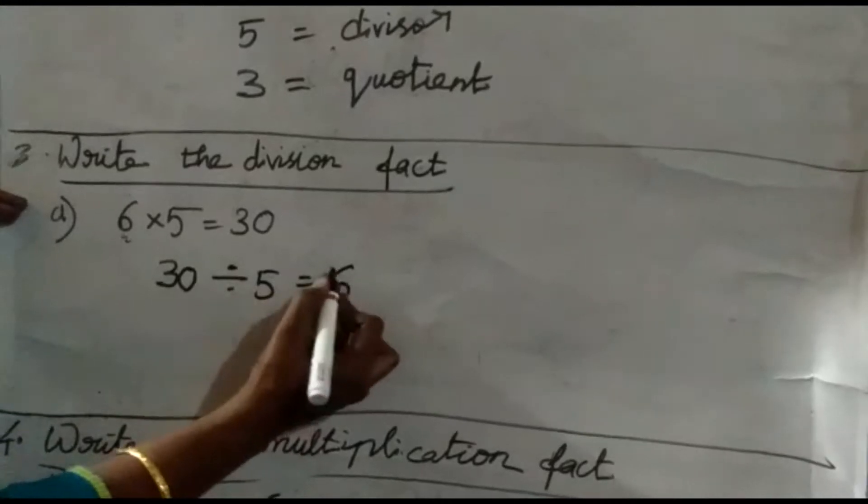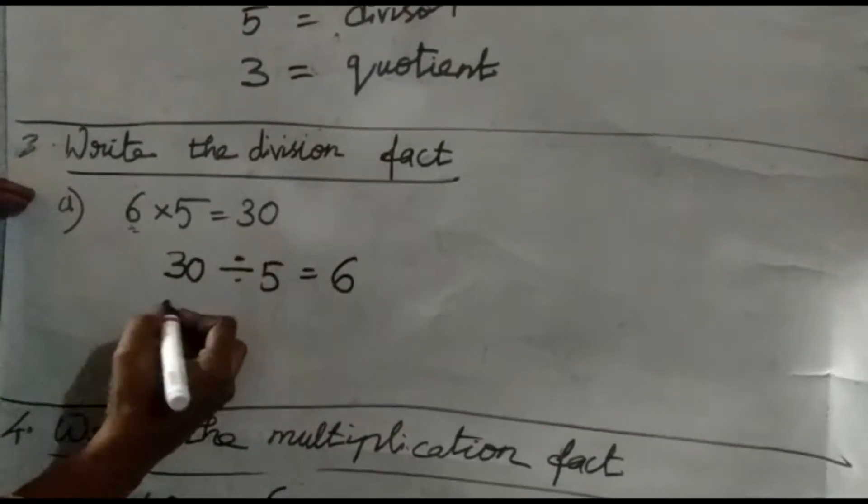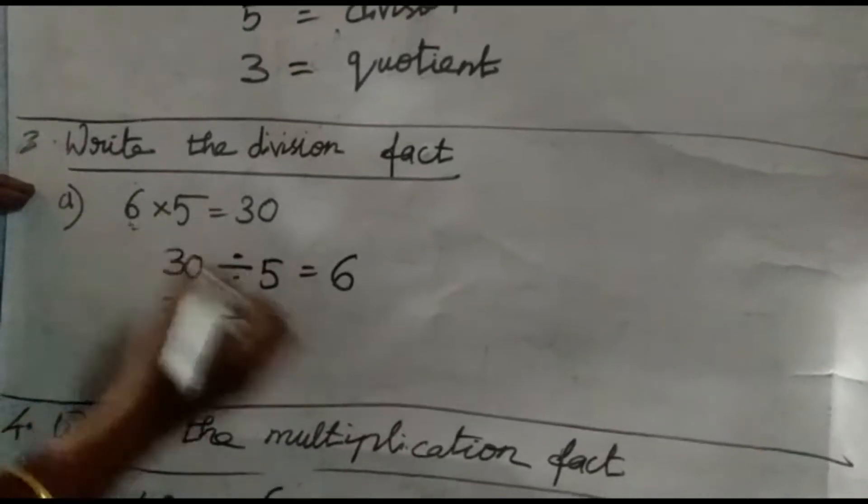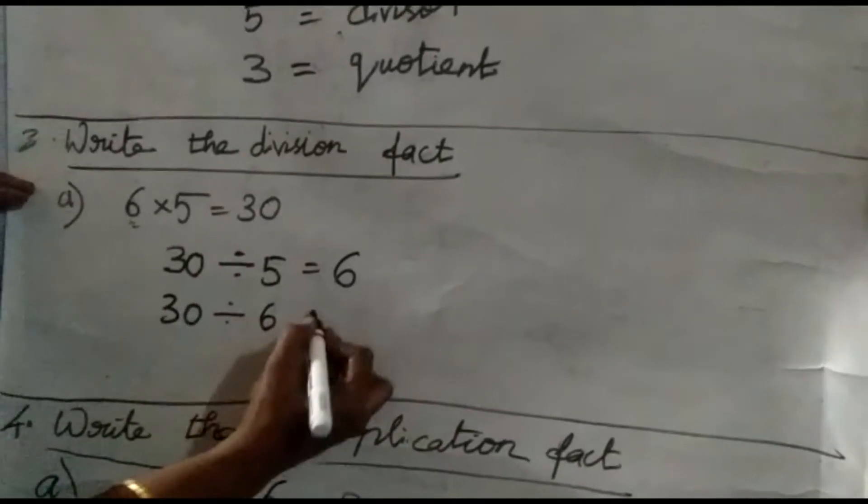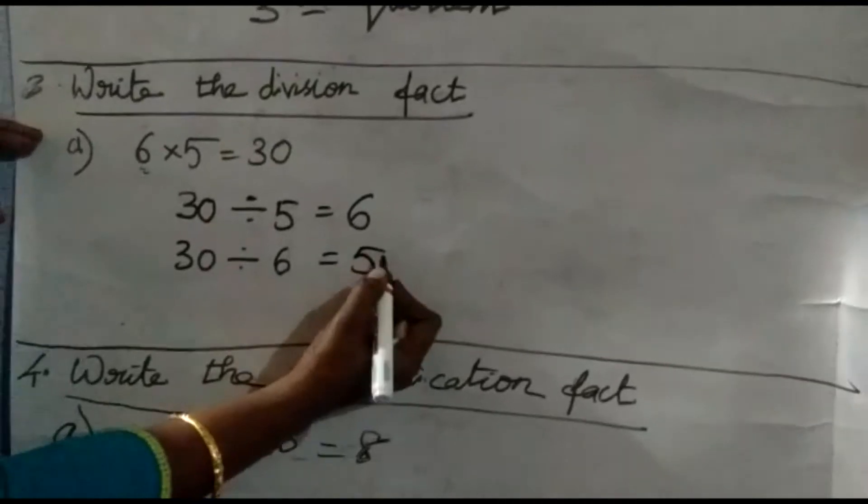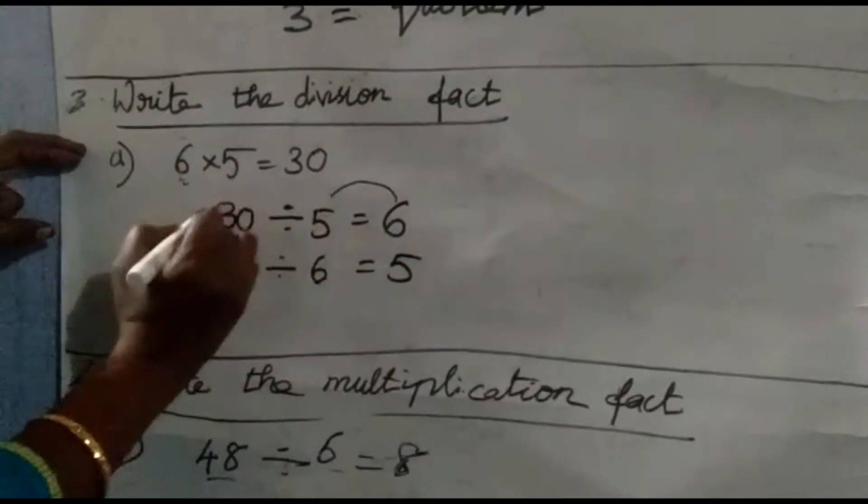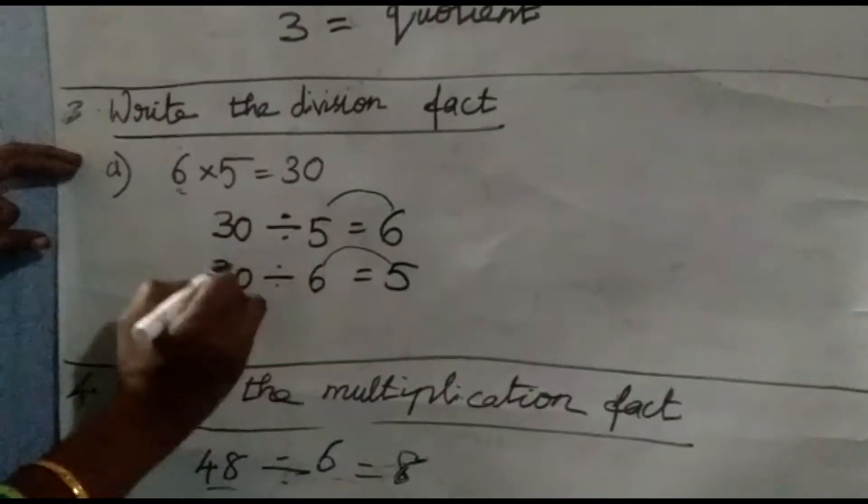Next, two facts. So 30 again, 30 divided by, just change these two numbers, 6 equals 5. Check whether your answer is correct or not. 6 times 5 is 30. Again, 5 times 6 are 30. Yes, our answer is 30. Yes, our answer is correct.